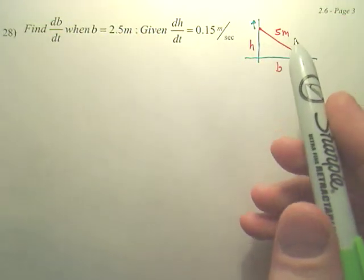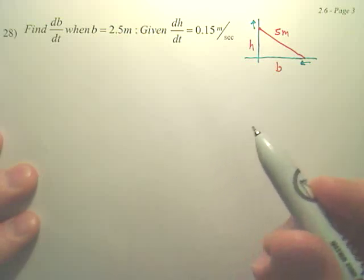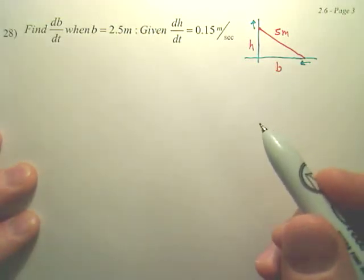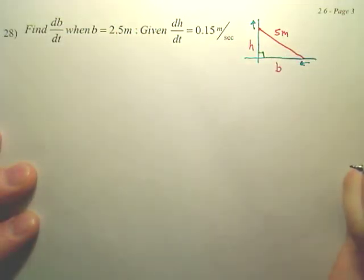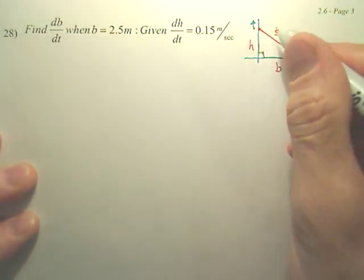In order to do this as related rates, we first need to start with an equation. We don't have one, but we really do. If your wall, which I hope it is, is a right angle, you see Pythagorean theorem.